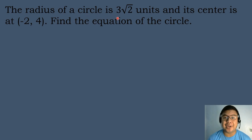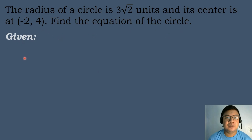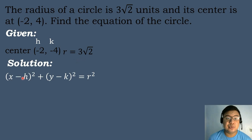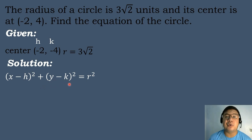Let's have our second example. The radius of a circle is 3 square root of 2 units and its center is at the coordinates negative 2, positive 4. Find the equation of the circle. The given: the center is at (negative 2, 4), where h equals negative 2 and k equals positive 4, and the radius equals 3 square root of 2. We will use the center-radius form: (x minus h) squared plus (y minus k) squared equals r squared.